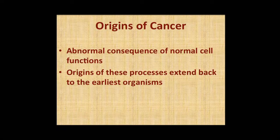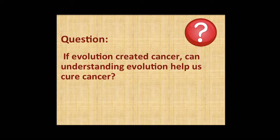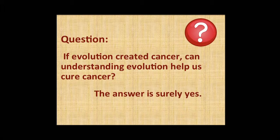The origins of these processes really do go back all the way to single-cell organisms. Darwinian evolution is in fact a major activity and causative for many things that we see within a single person and a single person's cancer. If evolution created cancer, can we understand evolution and use it to our advantage to block those processes and maybe even cure cancer, or at least delay its impact?